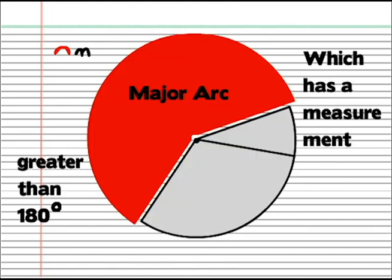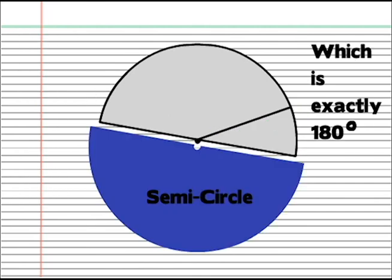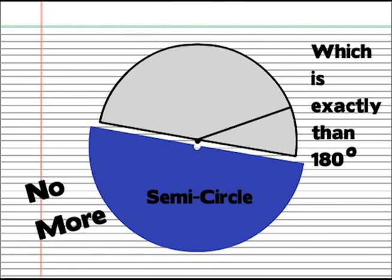There are three types of arcs. Major arc, which has a measurement greater than 180. Minor arc, which has a measurement less than 180. And semicircle, which is exactly 180. No more, no less.